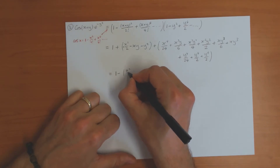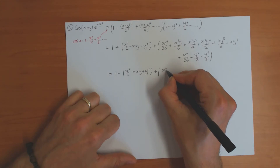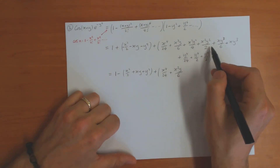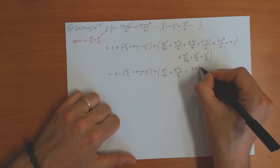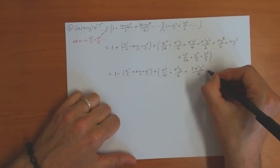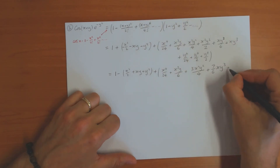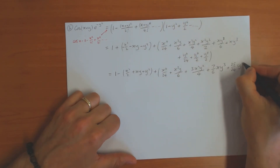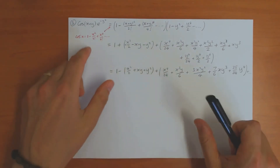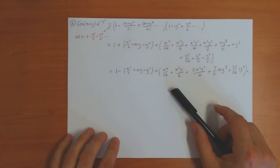Simplifying, this is one minus x squared over two plus xy plus y squared, plus x to the four over 24 plus x cubed y over six. For x squared y squared you have a quarter plus a half, which is three quarters. For xy cubed you have a sixth plus one, which is seven sixths. For y to the four you have one plus one over 24, which is 25 over 24, and so on. You can see that Taylor series in two or three dimensions can be obtained straight from one-dimensional Taylor series in this way.